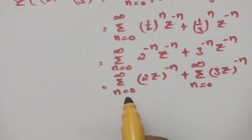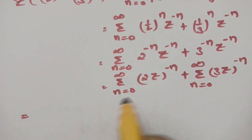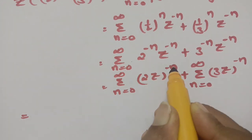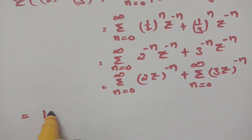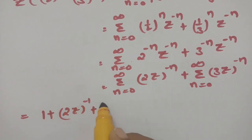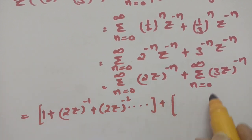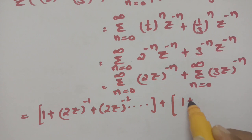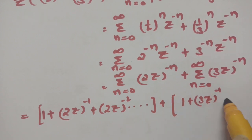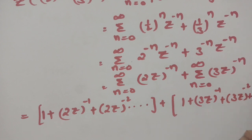If I substitute the values n = 0, 1, 2, 3, and so on, the first series becomes: (2z)^0 + (2z)^(−1) + (2z)^(−2) + ... which is 1 + (2z)^(−1) + (2z)^(−2) + ... And the second series becomes: 1 + (3z)^(−1) + (3z)^(−2) + ...